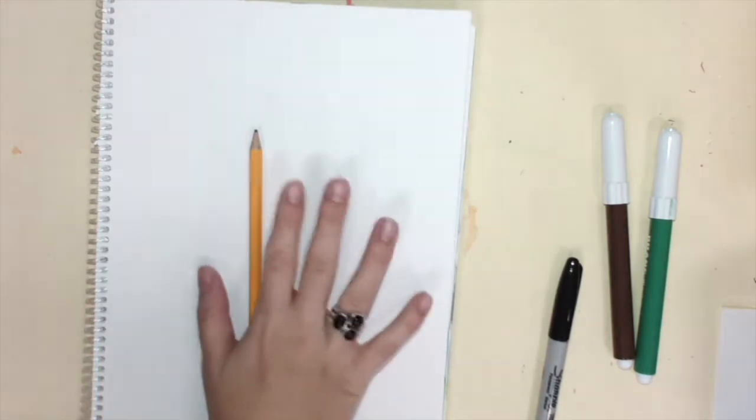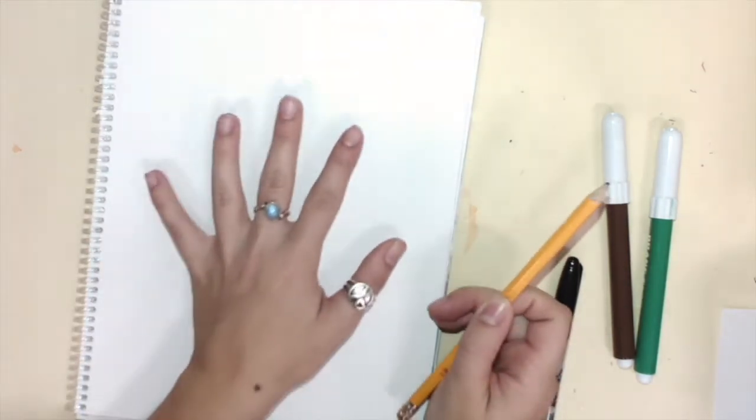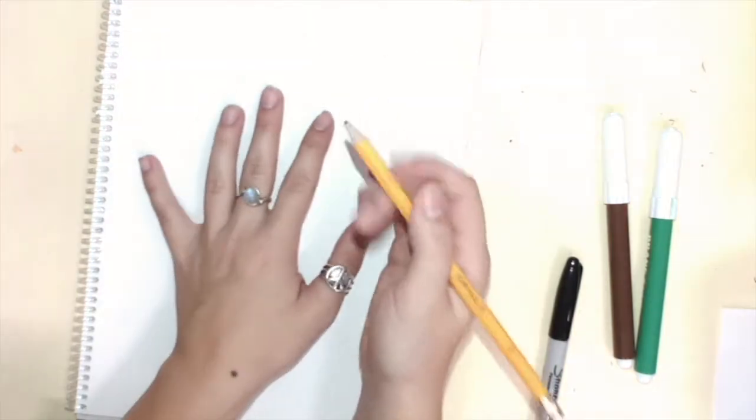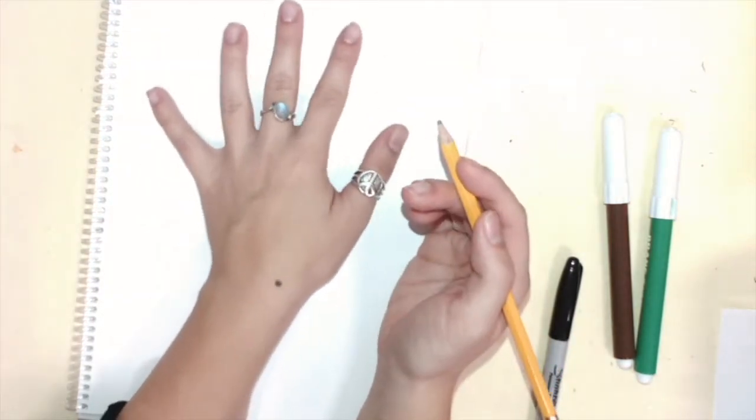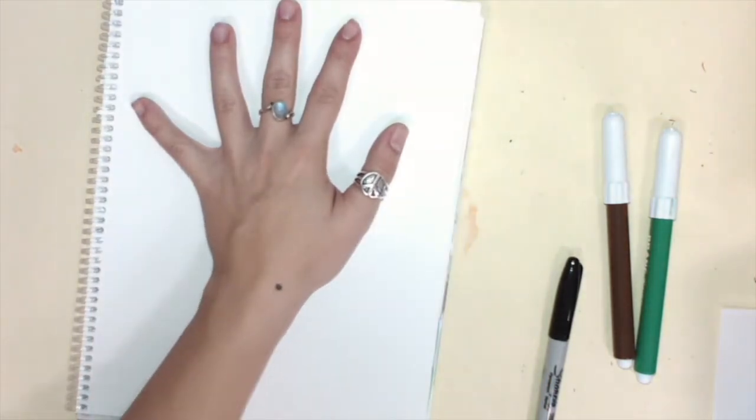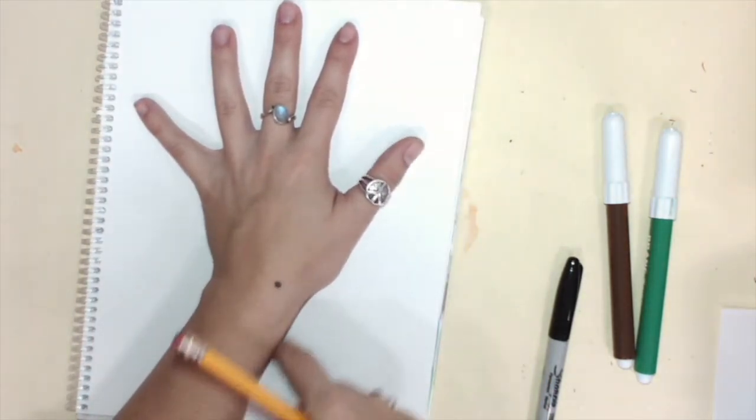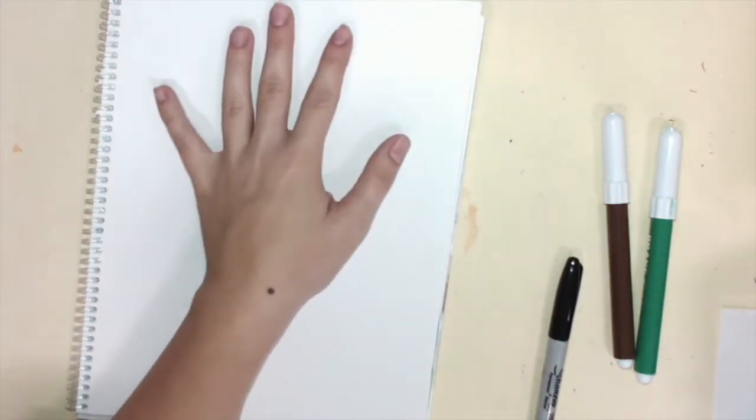So you're going to use the hand that you are not dominant. That means the hand you do not draw with. So I have my hand ready here. I can even bring my fingers up really tall. And this will be like the trunk of my tree and then my branches. So I'm actually going to take my rings off so those don't get in the drawing.